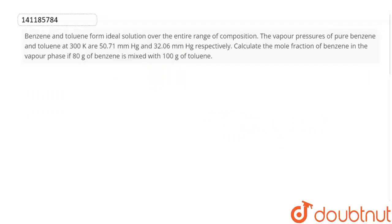See the question carefully. What is the question asking? Benzene and toluene form an ideal solution over the entire range of composition. The vapor pressures of pure benzene and toluene at 300 Kelvin are 50.71 mm of Hg and 32.06 mm of Hg.